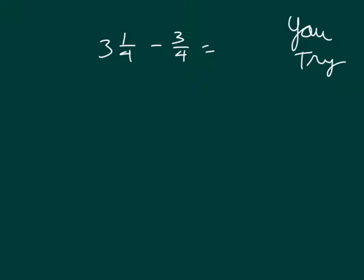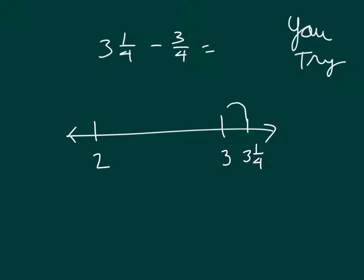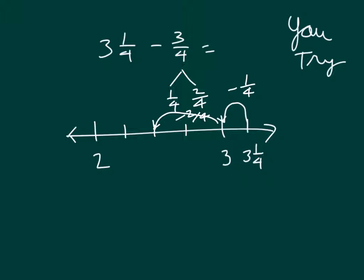Your turn to try. Here we have 3 and 1/4th minus 3/4ths. Be sure to use a number line. Pause the video while you do your work. On our number line, we would have 2 and 3. We mark 3 and 1/4th, travel back a 4th first, decomposing 3/4ths — taking away 1/4th to reach the whole number, then take away another 2/4ths to get to 2 and 2/4ths. Did you express that in simplest form?